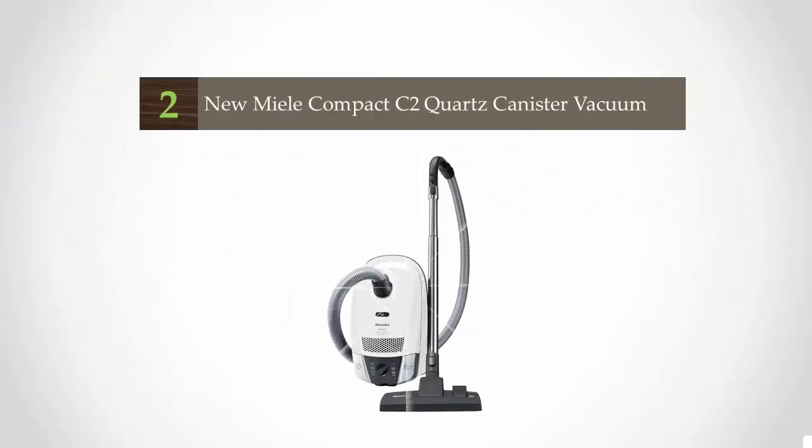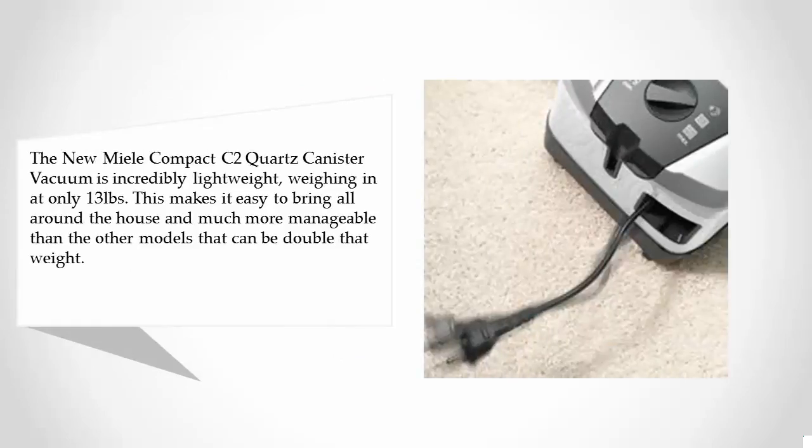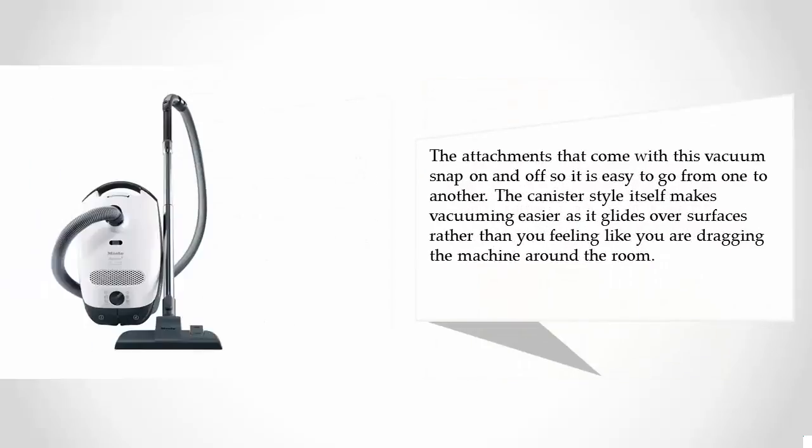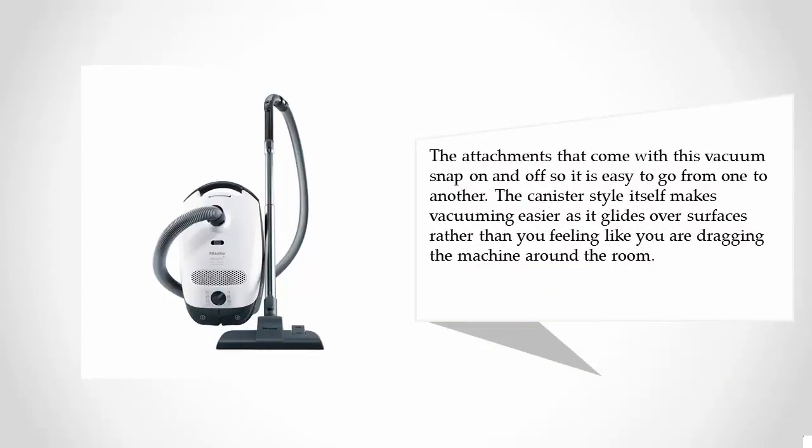At number 2, the new Miele Compact C2 Quartz Canister vacuum is incredibly lightweight, weighing in at only 13 pounds. This makes it easy to bring all around the house and much more manageable than the other models that can be double that weight.